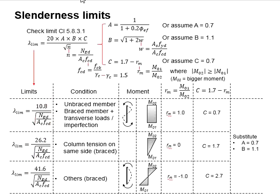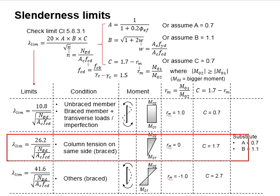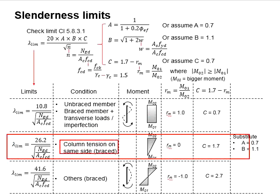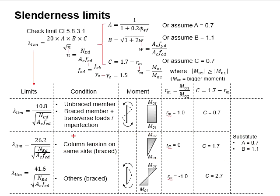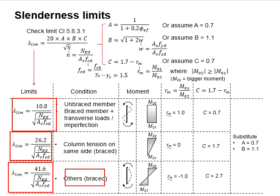The second limit is representing the braced column under the most critical situations where there are tension on one side of the column. The limit is slightly larger than the unbraced member but is smaller than the other braced conditions.